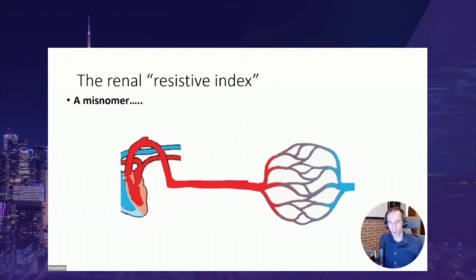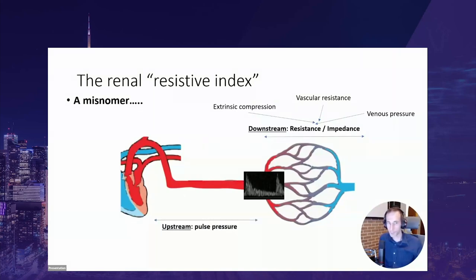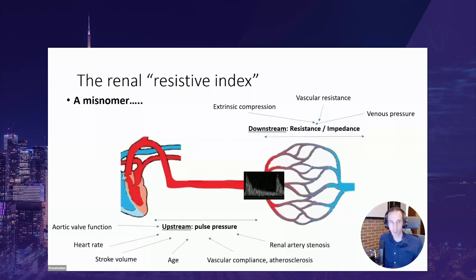The RRI is measured in medium-sized arteries of the renal arterial tree. Everything affecting downstream resistance or impedance can affect it — including vascular resistance, extrinsic compression such as in abdominal compartment syndrome, and high venous pressure. Upstream factors influencing pulse pressure also affect the arterial Doppler waveform: aortic valve function, arterial volume, age, vascular compliance, and any obstruction such as renal artery stenosis will all modify the waveform and influence the resistive index.